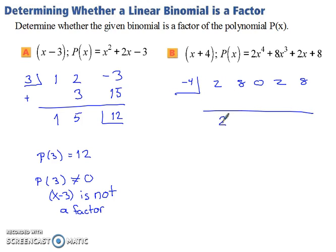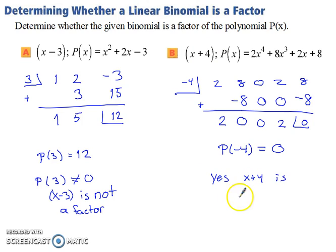We have 2, which leaves us with negative 8. Adding vertically brings us to 0. 0 times negative 4 is 0. 0 plus 0 is 0. And then we have 2 plus 0 is 2. Negative 4 times 2 is negative 8. And 8 plus negative 8 is 0. So P of negative 4 equals 0. Remainder of 0 means that x plus 4 is a factor. So yes, x plus 4 is a factor.